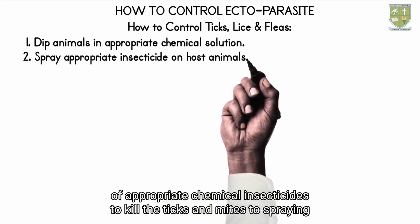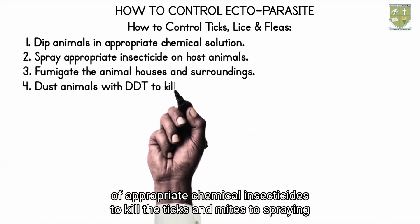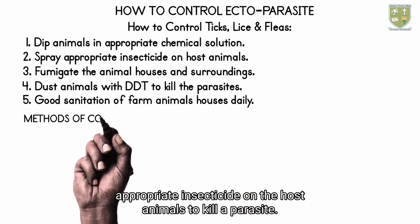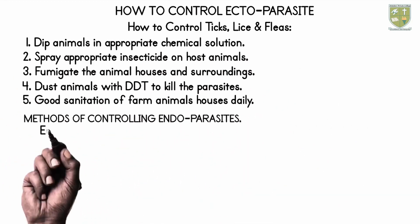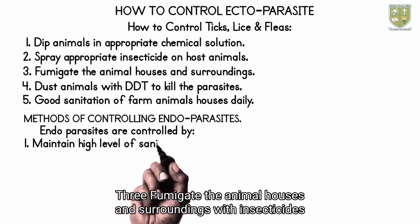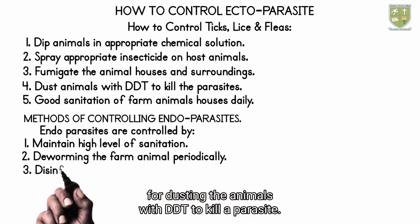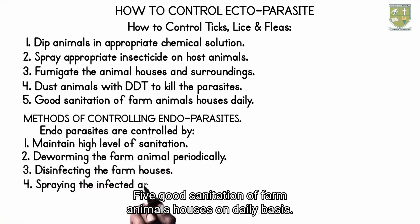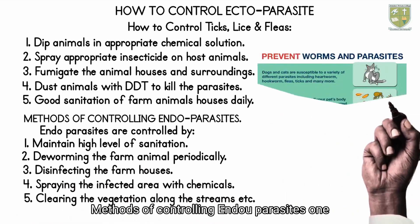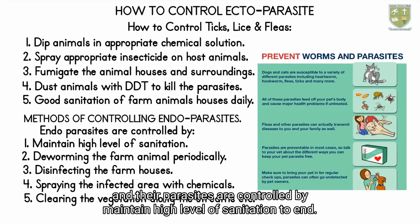Methods of controlling ectoparasites — ticks, lice and fleas can be controlled by: one, dipping of animals in a solution of appropriate chemical insecticides to kill ticks and mites; two, spraying appropriate insecticide on the host animals to kill the parasite; three, fumigating the animal houses and surroundings with insecticides; four, dusting the animals with DDT to kill the parasite; five, good sanitation of farm animal houses on a daily basis.